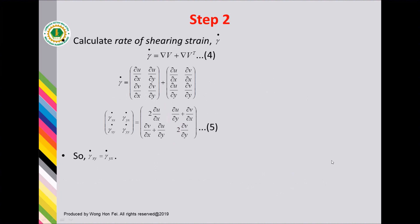Step two: calculate the rate of strain tensor gamma-dot. The gamma-dot is given by the gradient operator of V plus the transpose of it, given by equation 4. Then substitute all the shear rate components found in step one to get equation 5. We can prove that gamma-dot xy is equal to gamma-dot yx.